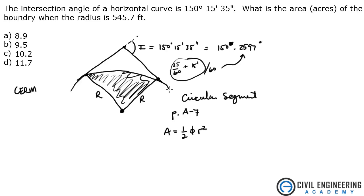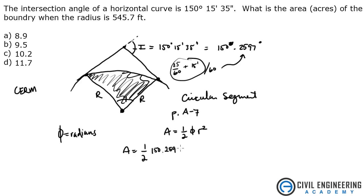We know, because of horizontal curves, that the interior angle is the same as this angle here — these two are the same. You need to remember that phi is in radians, so we need to convert it because we're working with degrees. To find the area, plug in one-half times 150.2597 degrees, multiply by pi over 180 to get it into radians, then multiply by r squared, which is 545.7 feet.